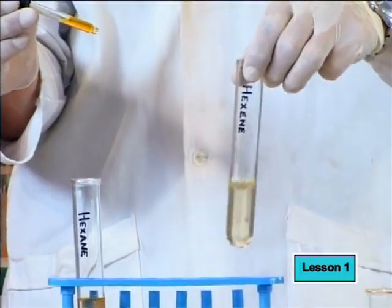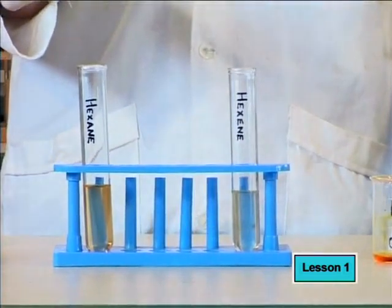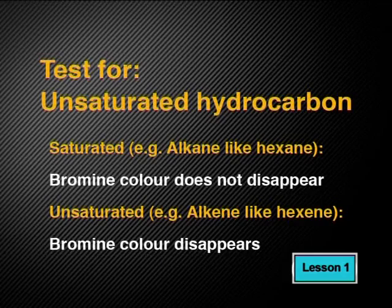Wow, this is interesting. It seems that when we add bromine to unsaturated hexene, the bromine color quickly disappears. We have a useful test for unsaturated hydrocarbons, whether they are alkenes or other types of molecules.